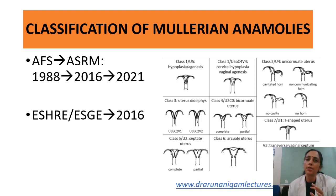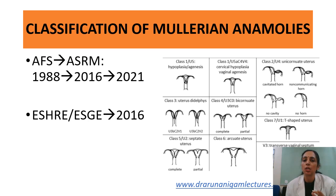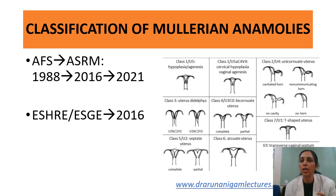The AFS classification has been criticized for its focus primarily on uterine anomalies, with exclusion of those of the vagina and the cervix. It also lacks clear-cut diagnostic criteria and has an inability to classify all anomalies.